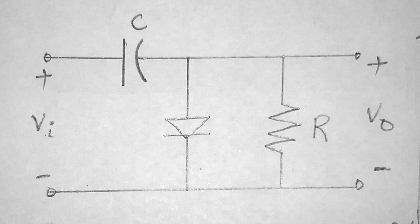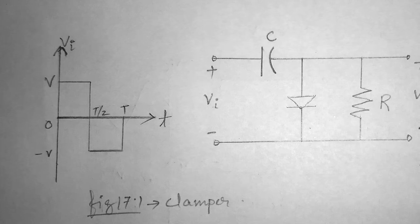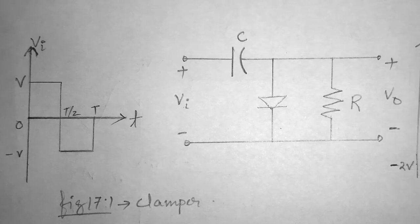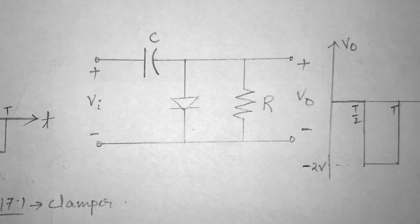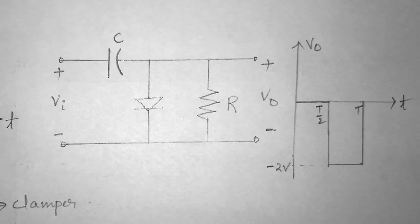Basically, clamper is an electronic circuit that changes the DC level of a signal to the desired level without changing the shape of the applied signal. In other words, the clamper circuit moves the whole signal up or down to set either positive peak or negative peak of the signal at a desired level.